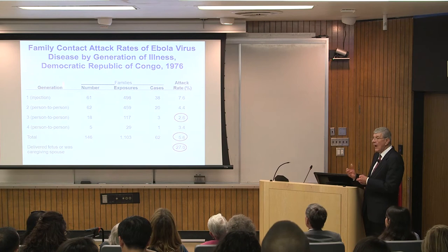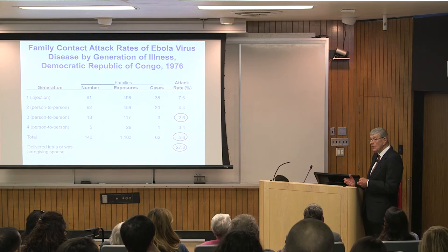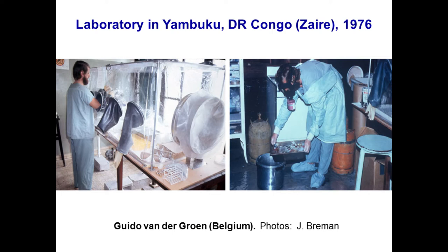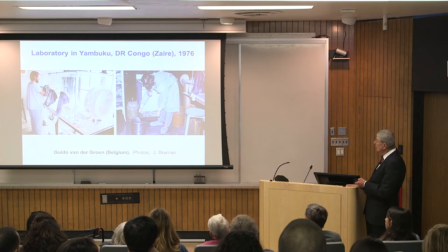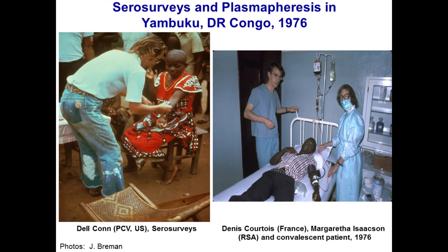We brought all the equipment up and could collect serum specimens and do the immunofluorescent antibody test right that day and have a result — particularly for finding those who had recovered and identifying them as convalescents. Here's Dr. Vandergroen with his glove box — there was a little fan in the corner providing negative pressure. He was actually in a toilet doing his IFA testing with the microscope.